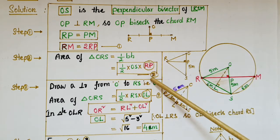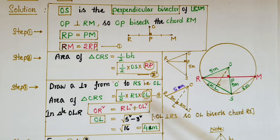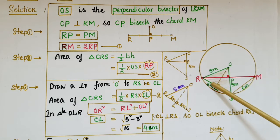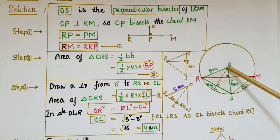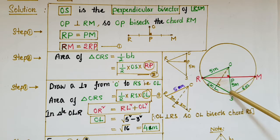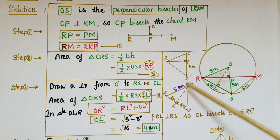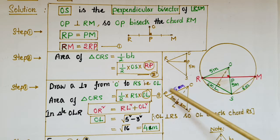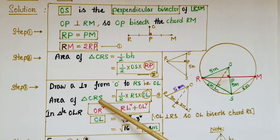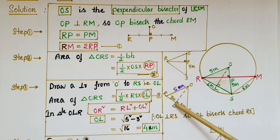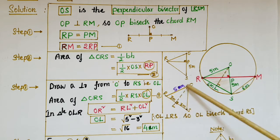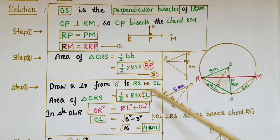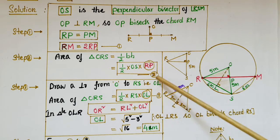Next, we draw a perpendicular line from the center of the circle to chord RS. We know that if a line is drawn from the center of the circle to a chord, it bisects the chord. So RL equals LS equals 3 meters. In the same triangle ORS, the area of the triangle equals one-half into RS into OL, where OL is the corresponding height. This is equation 3.